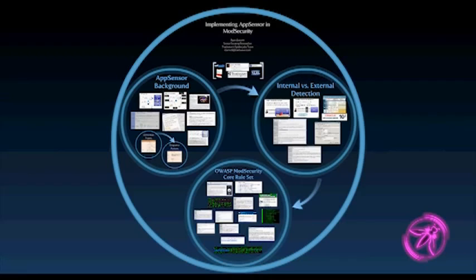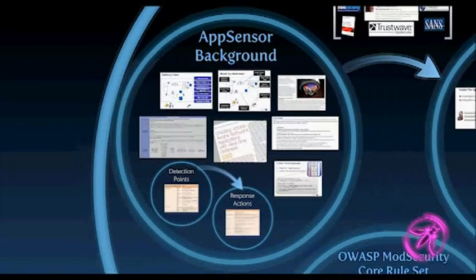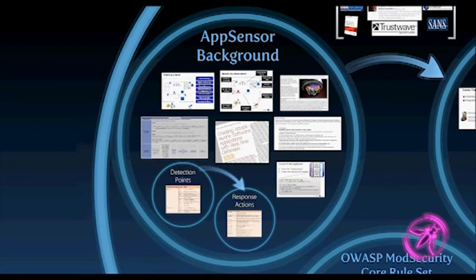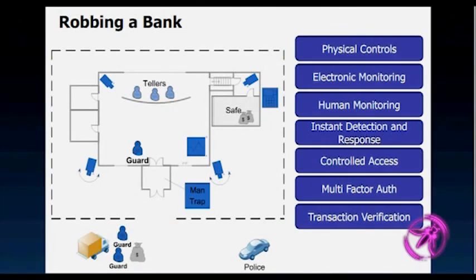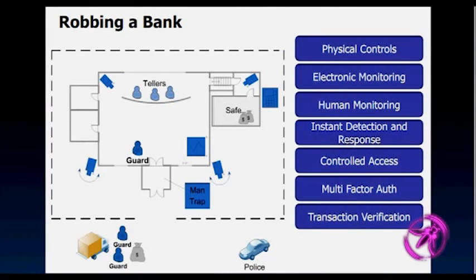So AppSensor — what is it? The best way to look at this is through a real-world analogy: try and look at a bank. On the right-hand side are all sorts of different security controls you should have. You have armed guards, police at the bottom for incident response, front doors that can be locked, and security cameras scrolling around. All these different things make sense in the physical world, and the money is hidden off in a secure location.